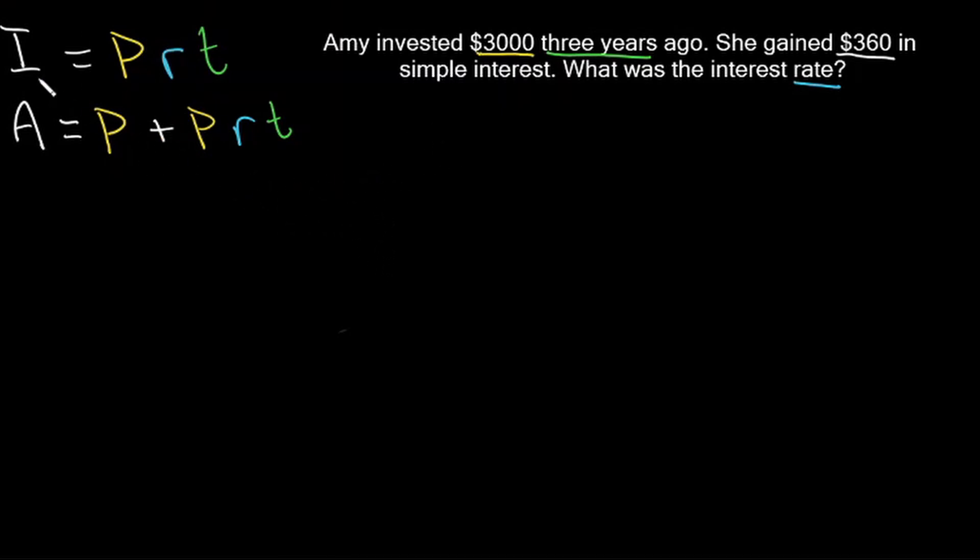So let's use our equations here and see if we can solve for that. Interest, let's use this first one. Interest, which is 360, is going to be equal to the principal, which is 3,000, multiplied by the rate, which we do not know, multiplied by time, which we know to be three years.